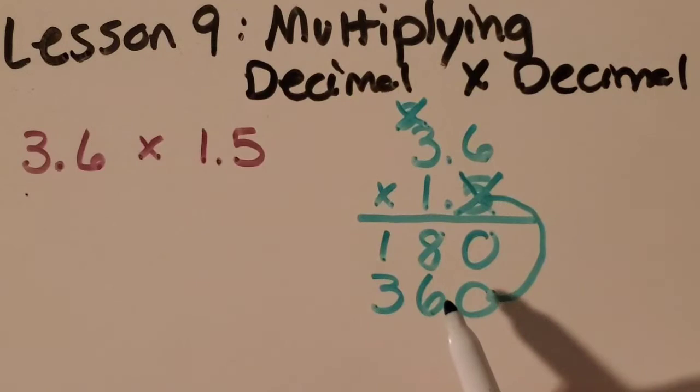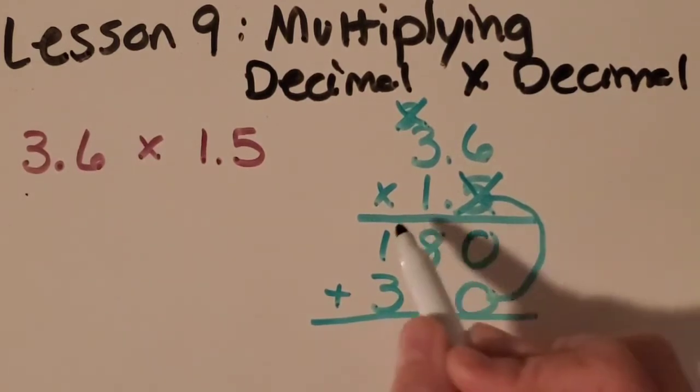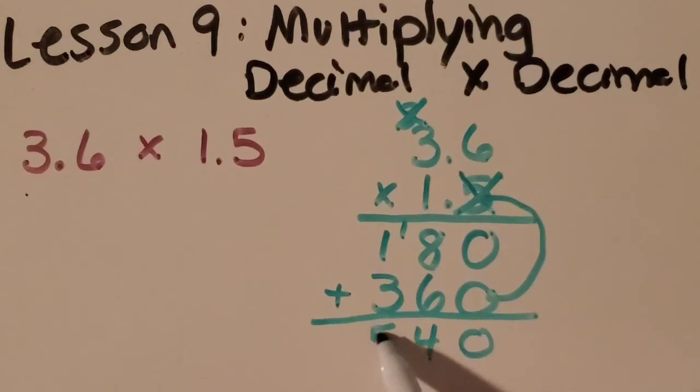Okay so now I'm going to add my two partial products. I've got 0, 14, and 5.